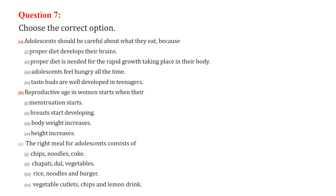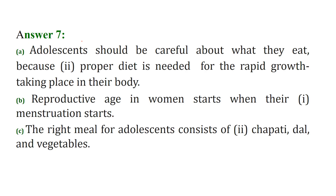Multiple choice: Adolescents should be careful about what they eat because proper diet is needed for the rapid growth taking place in their body. Reproductive age in women starts when their menstruation starts. The right meal for adolescents consists of chapati, dal, and vegetables — that is bread, legume, and vegetables.